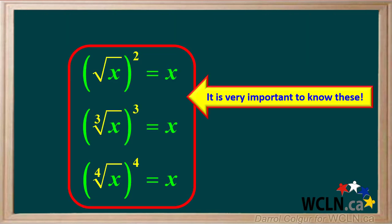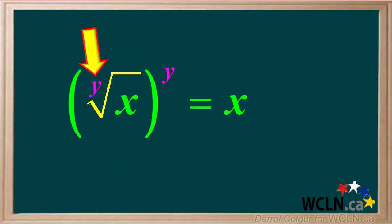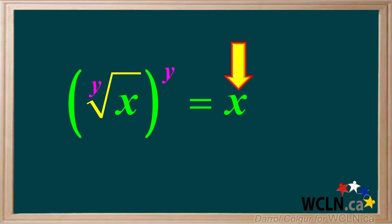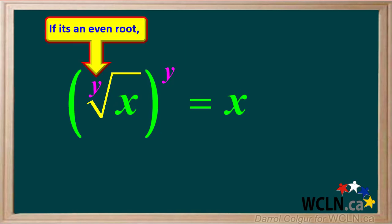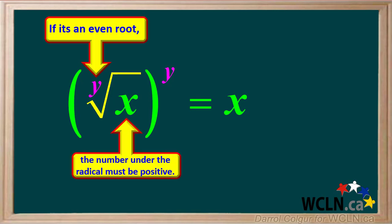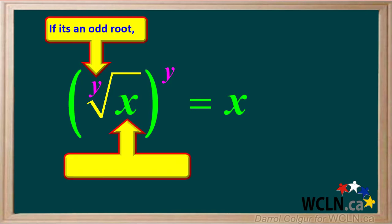It's very important to know these equations — they'll come in very handy later on when you solve equations involving radicals. We can generalize by saying that the y-th root of a number, raised to the power y, is just equal to the number. If y represents an even root, like a square root, fourth root, or sixth root, the number under the radical, or x, must be a positive number. But if y represents an odd root, like a cube root, fifth root, or seventh root, the number under the radical, or x, can be positive or negative.